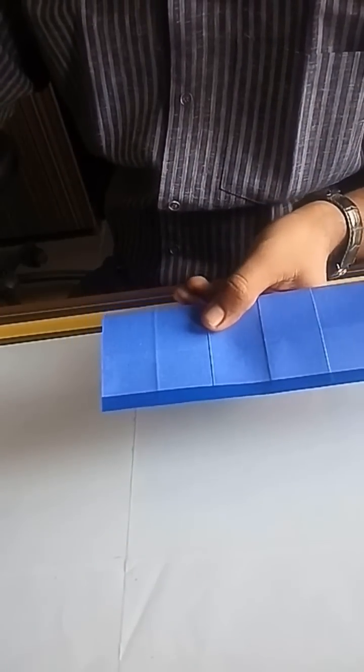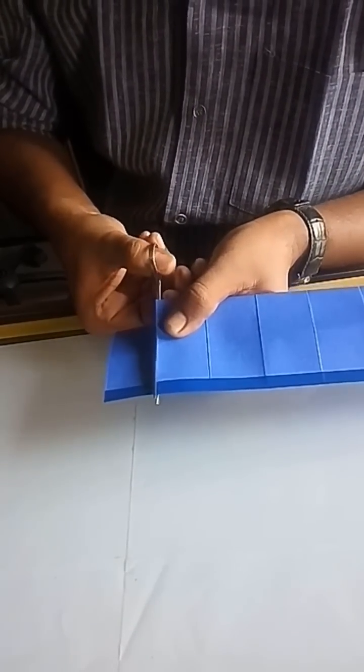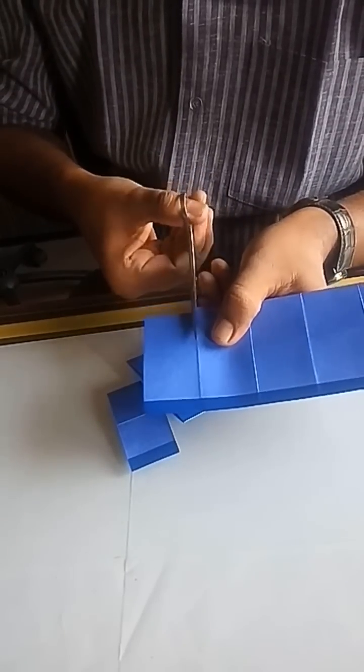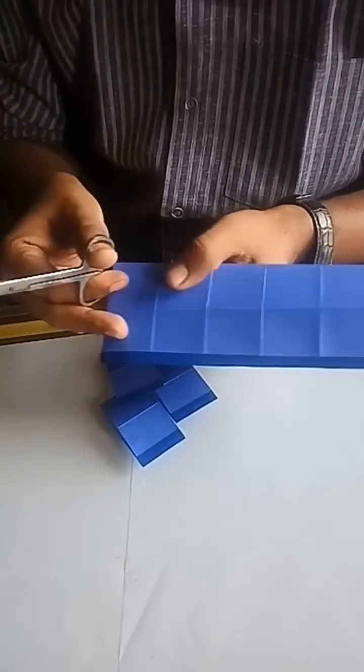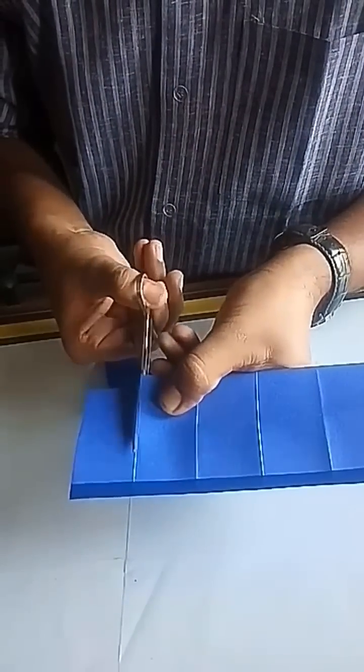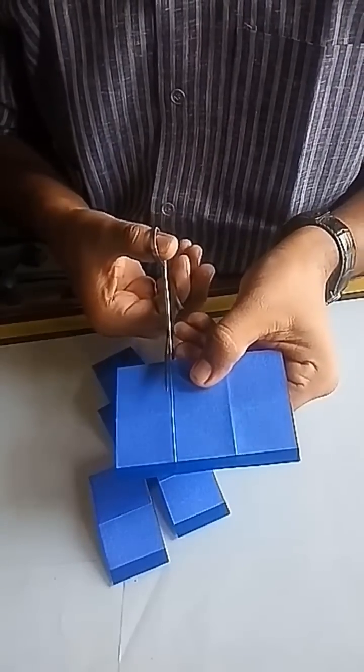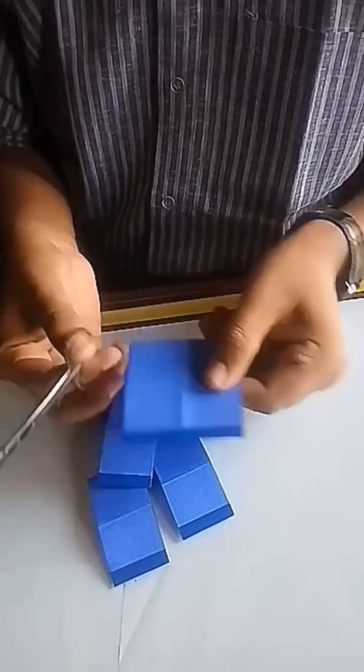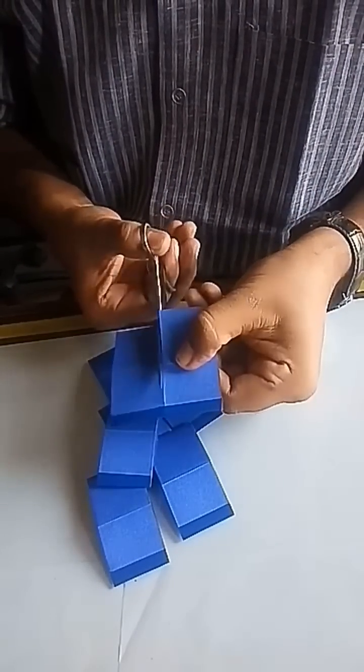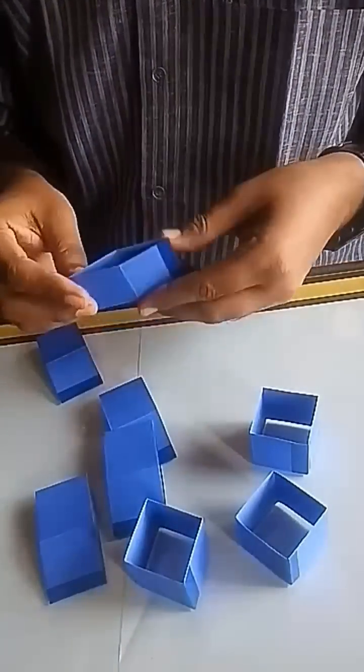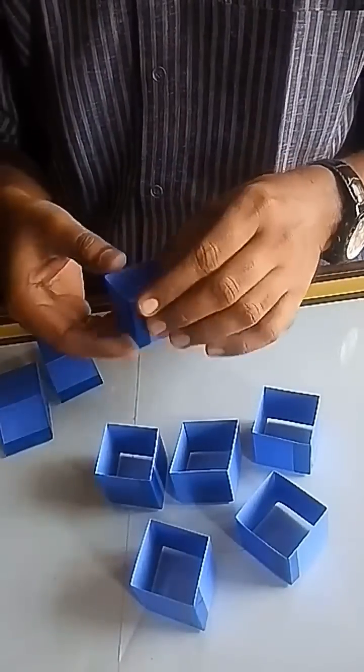You will get a square tube having eight cubes. Now cut the tube into eight equal parts from the creases. You will get eight identical open cubes. You can see how beautiful these cubes are.